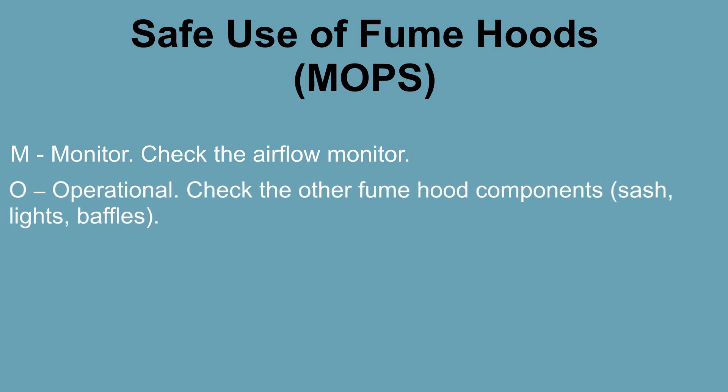O stands for Operational. Check the other fume hood components such as the sash, lights, and baffles to make sure that these items are operational. Do not remove the fume hood sashes, baffles, or airfoil except when it is necessary to set up apparatus — they must be replaced before any operations begin. All chemical fume hoods should have spill protection lips along the front of the hood. If your hood has a cup sink, it should have a lip as well.